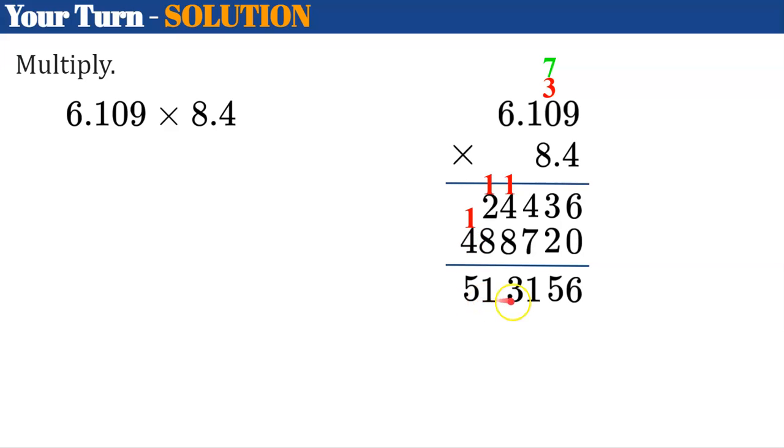Now I need to go and find out where to put my decimal point. So I count my decimal places. There's 3, 1, 2, 3, and then a 4th. So I have 4 digits beyond the decimal point. It means I need to come back to my product, my answer, and put my decimal point 4 digits from the right, which is right there, giving me a product of these two factors of 51.3156.